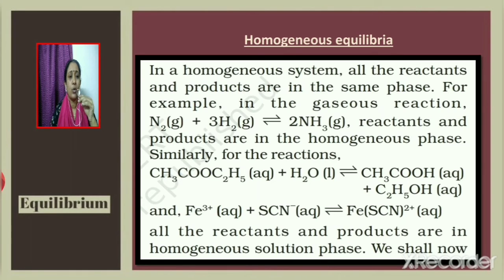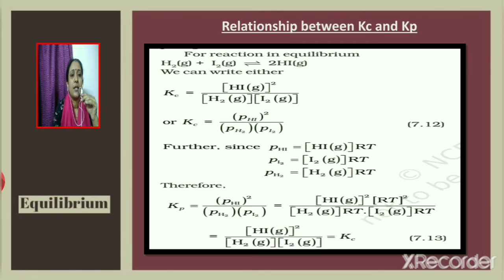Next, homogeneous equilibria: in a homogeneous system, all reactants and products are in the same phase. For example, N₂ + 3H₂ ⇌ 2NH₃ — all species are in the gaseous phase — represents homogeneous equilibrium. Similarly, hydrolysis of ester CH₃COOC₂H₅ to acetic acid and ethanol, where all species are in aqueous phase, also represents homogeneous equilibrium.